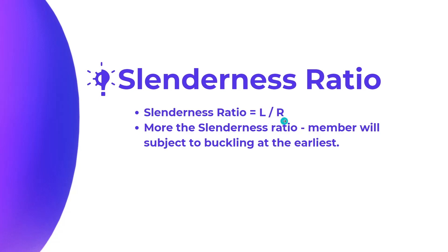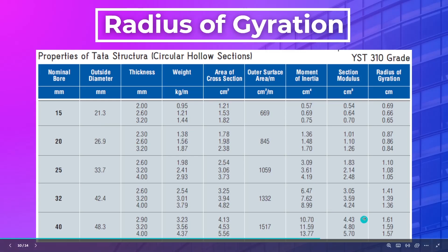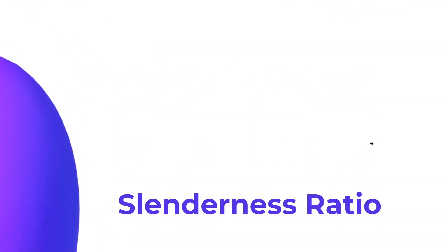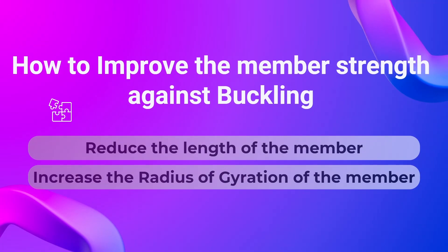If the radius of gyration for a particular member is high, it will bring down the slenderness ratio of that member. In the tabular form we saw earlier, a 40 mm diameter section of 2.9 mm thickness will withstand more buckling than a 4 mm tube, simply because of its higher radius of gyration. Finally, to improve the slenderness ratio against buckling — that is, to reduce the slenderness ratio — either we reduce the length of the member or increase its radius of gyration.